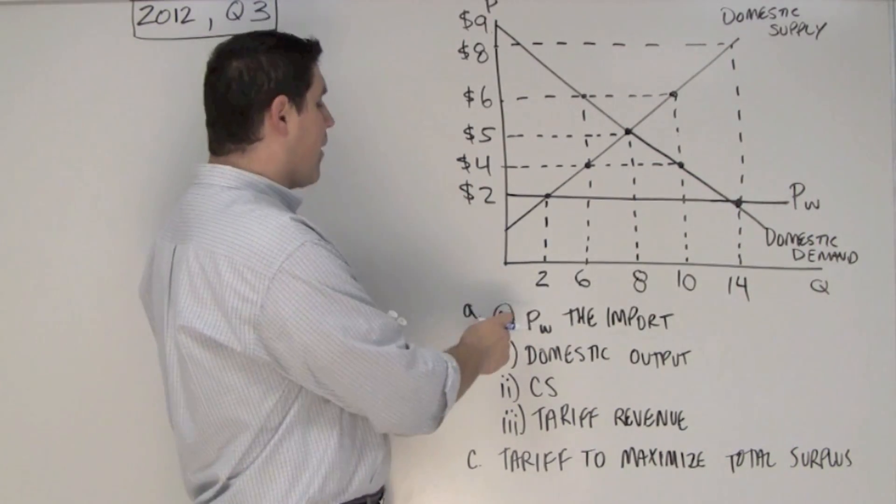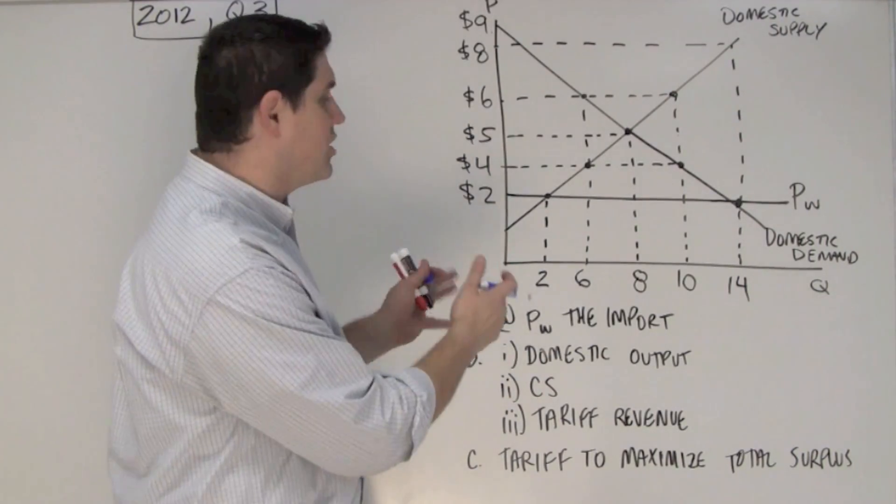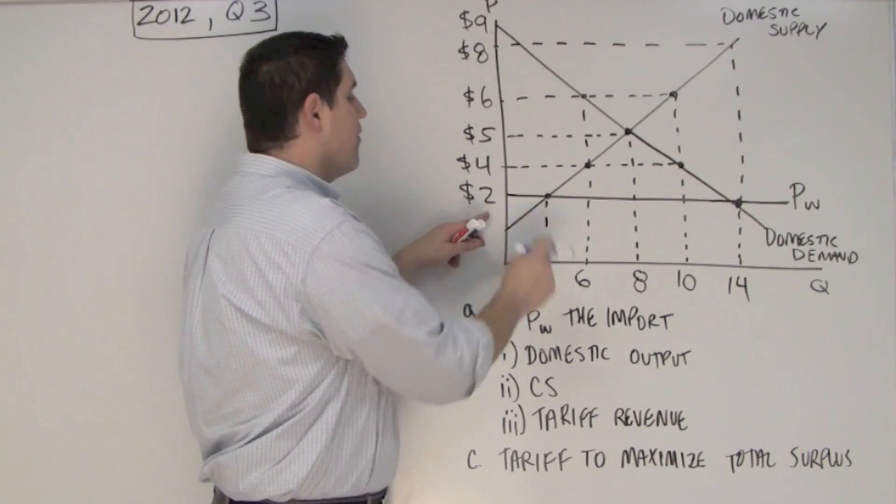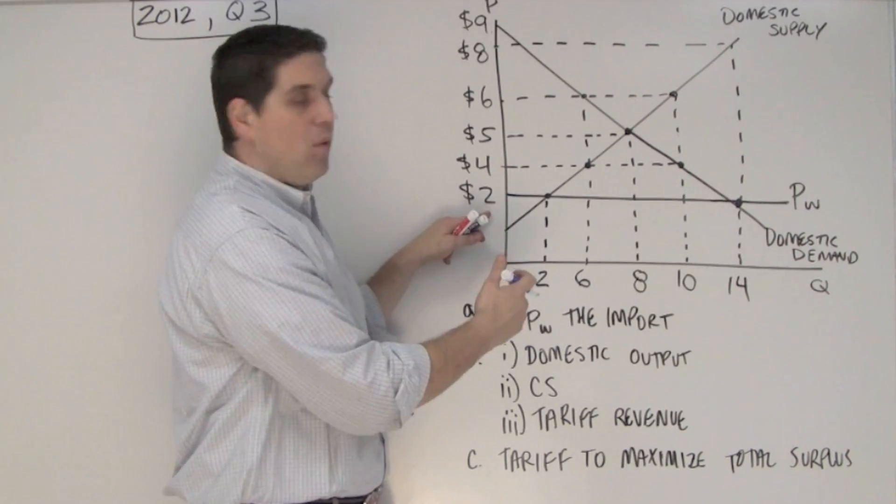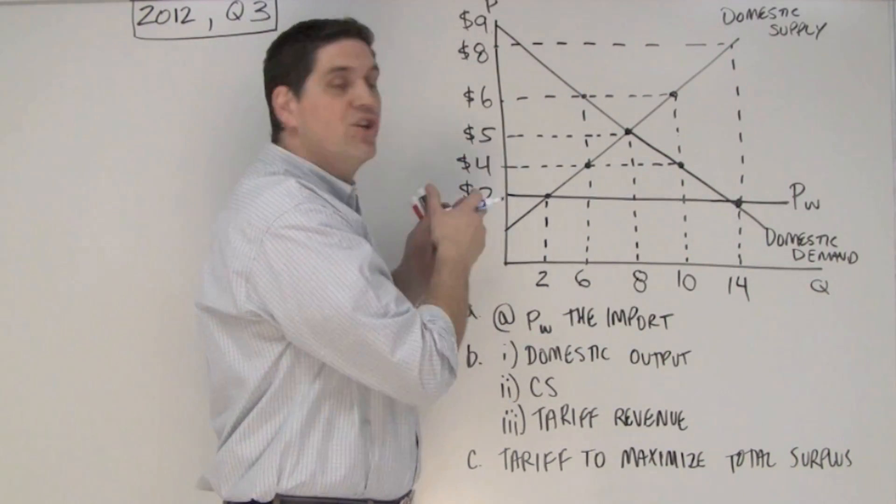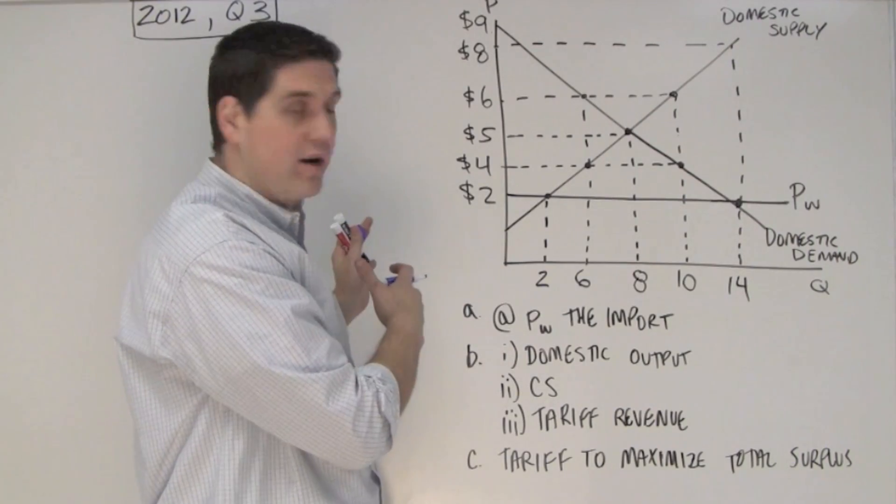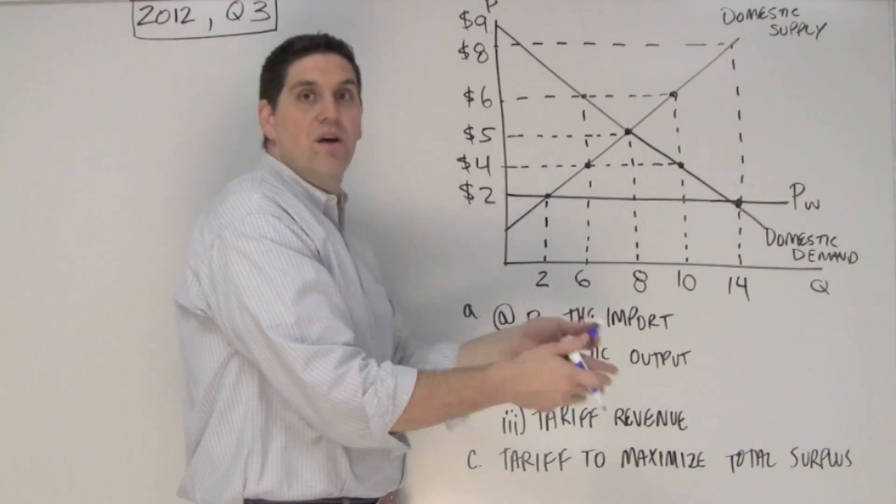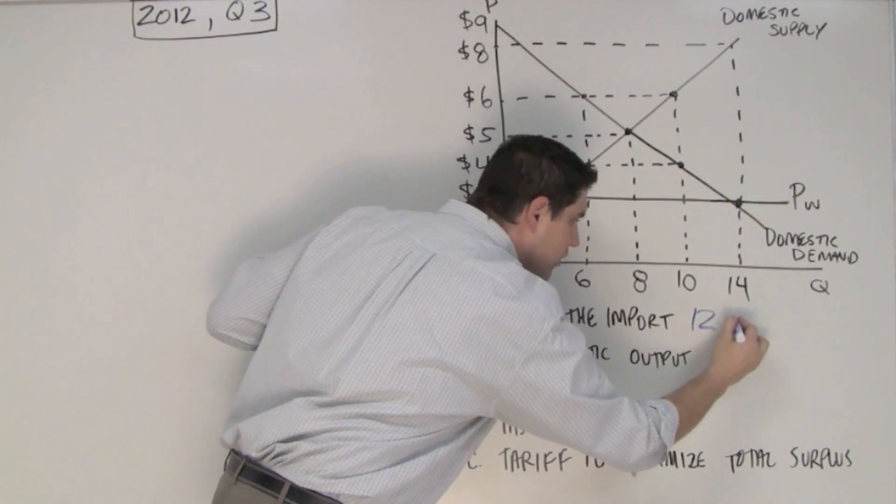First question asks you, at the world price of PW, how much will this country import? At $2, the quantity supplied domestically will be 2, but people will want quantity demanded at 14. So that distance between them, the amount that there would be a shortage if there was no trade in another market, is the amount that's going to import from other countries. So the answer right here is 12 units.